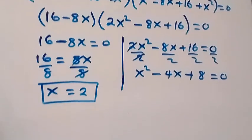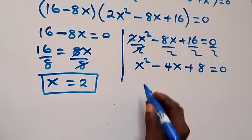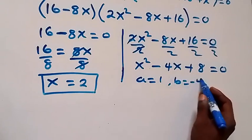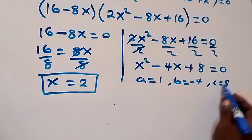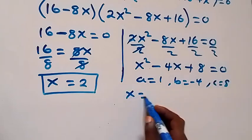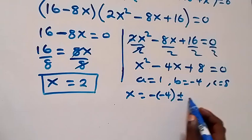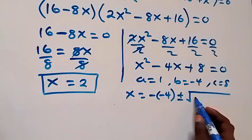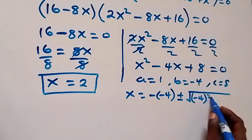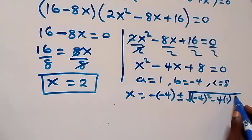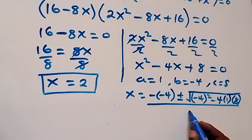Applying the quadratic formula: a equals 1, b equals minus 4, c equals 8. So x equals minus b, which is minus (minus 4), plus or minus square root of b squared minus 4ac, that's (minus 4) squared minus 4 times 1 times 8, all over 2a, which is 2 times 1.